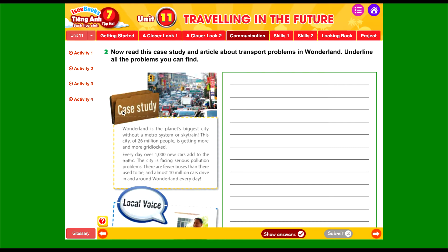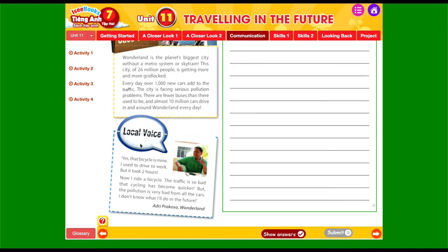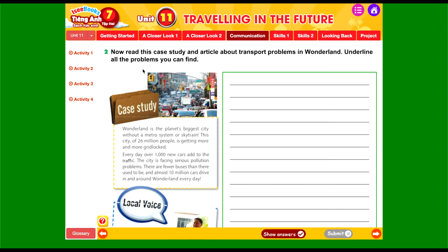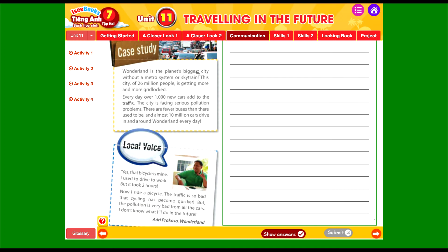Bên dưới sẽ là một nghiên cứu cụ thể về một trường hợp nào đó. Chúng ta sẽ cùng đọc về bài báo này để xem nó có nội dung gì, và gạch chân những vấn đề được đề cập. Wonderland là thành phố lớn nhất của hành tinh mà không có hệ thống xe điện ngầm hay tàu trên không nào. Thành phố này với khoảng 26 triệu người dân đang ngày càng đông đúc hơn. Mỗi ngày có khoảng 1,000 xe ô tô mới tham gia giao thông, và thành phố đang đối mặt với vấn đề ô nhiễm cực kỳ nghiêm trọng.